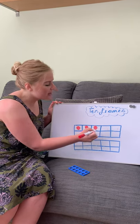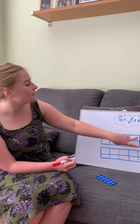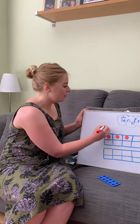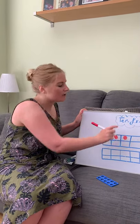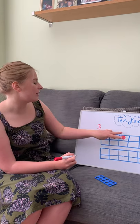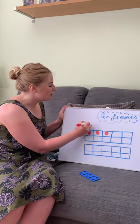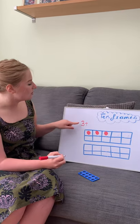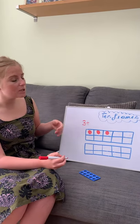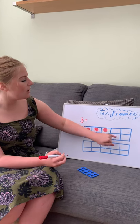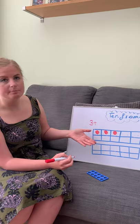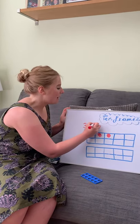So I've put 3 counters on my top 10 frame. This is my abstract — my classic number sentence. I've got 3, and then I could work out an addition problem. So I could do 3 add, and then what you can do is prompt your child to count how many are left, how many have not been covered. So I know that it's 7, but they would count.